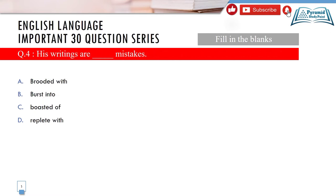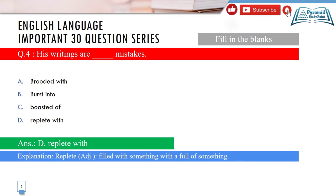Question number 4 is another fill-in-the-blank. The sentence is about writing that is full of mistakes. Options: A) brooded with, B) burst into, C) bursted off, D) replete with. The correct answer is 'replete with,' which means filled with or full of something. Here, the writing is full of mistakes, so 'replete with' is used.